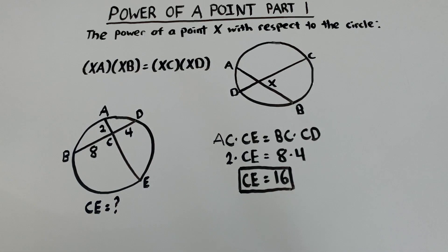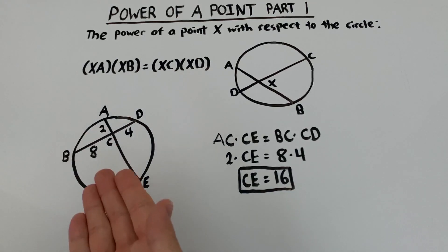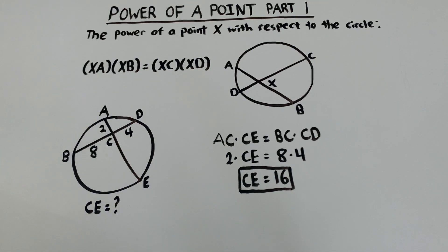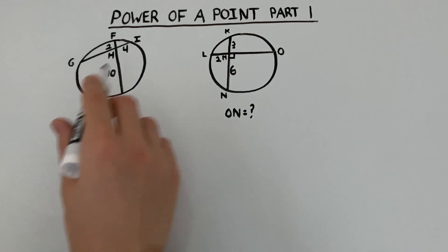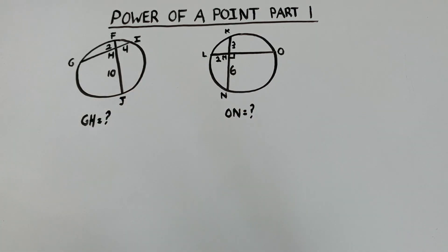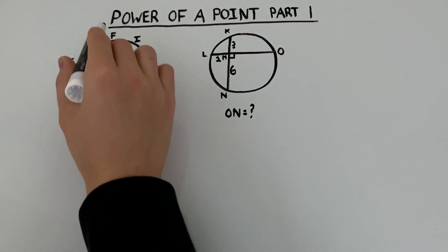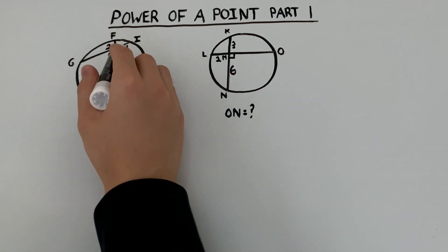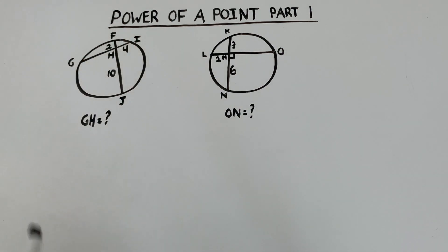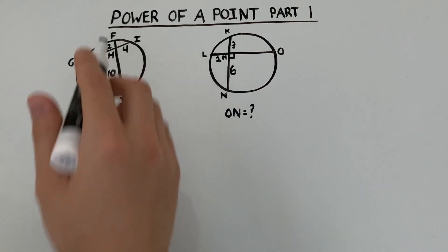So that was just us using the power of a point theorem very directly on this problem. But now let's move on to some more examples. Alright, so we have two more examples using power of a point. So over here, FH equals 2, HJ equals 10, HI equals 4, and we need to find the length of GH.